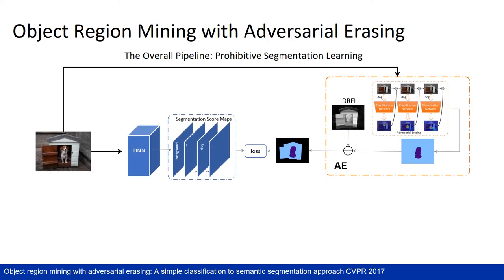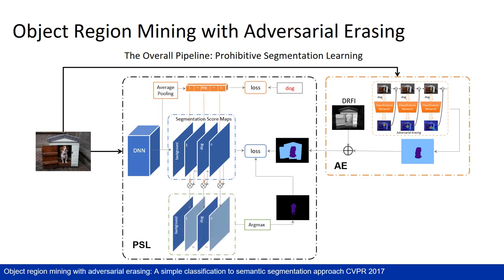We use saliency detection techniques to produce background cues. The blue regions are unlabeled pixels. To employ those ignored regions as well as reduce noise, we further propose an online PSL module to work with AE together. In particular, PSL introduces a classification branch. This branch provides classification confidence to modulate the corresponding category-specific maps and form them into additional masks for segmentation. Those confidence maps with low classification confidences are prohibited from contributing to semantic segmentation masks.